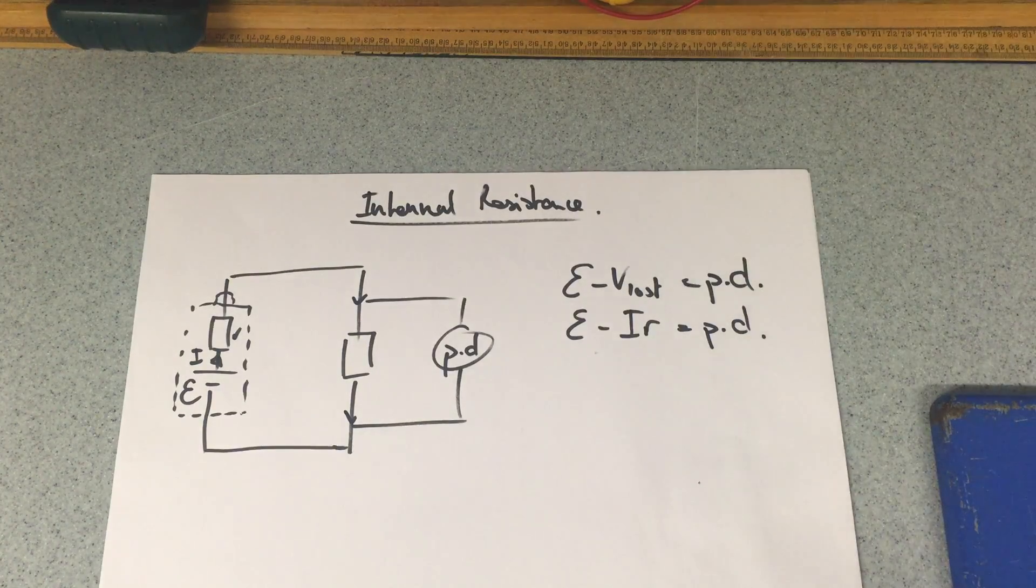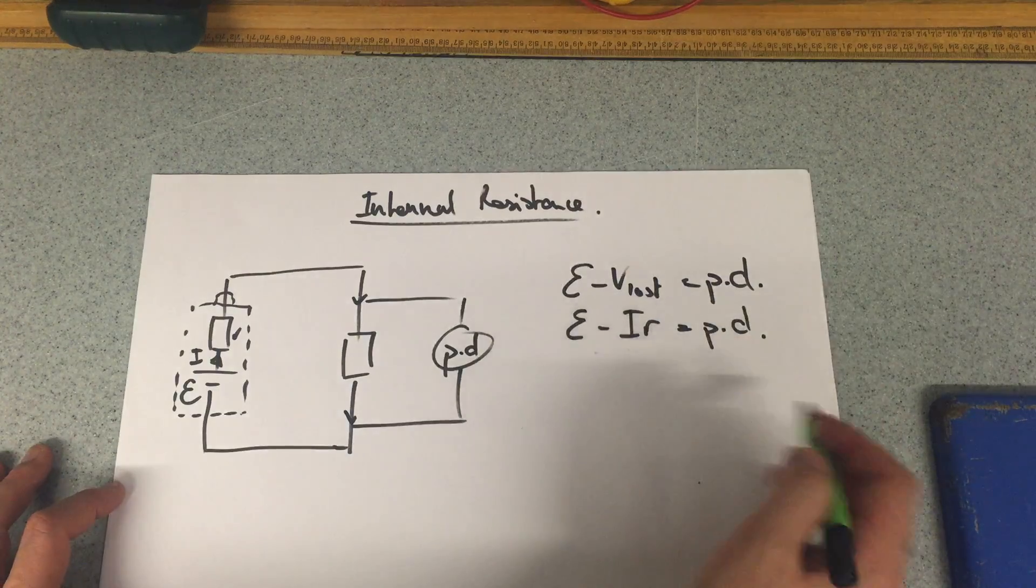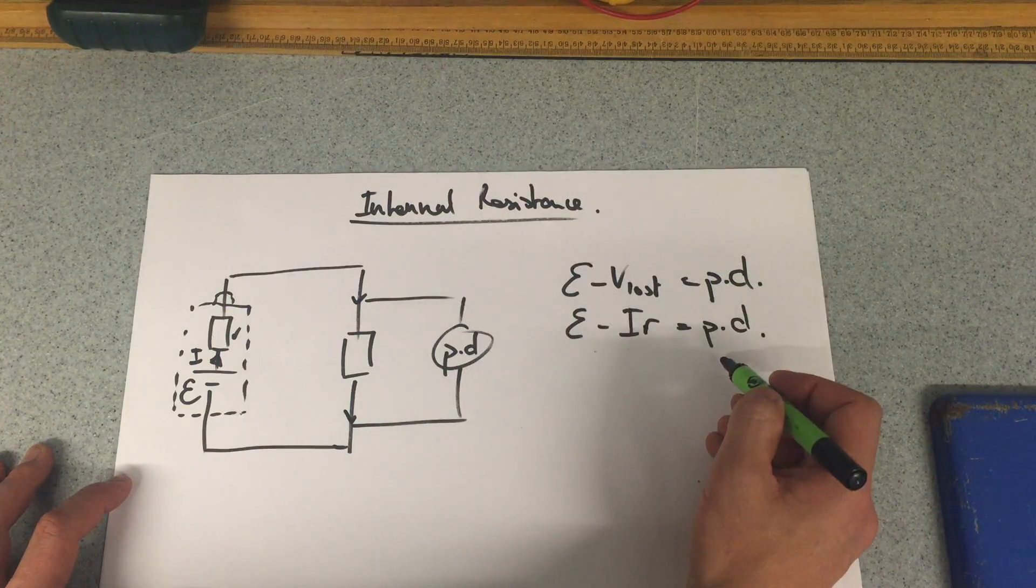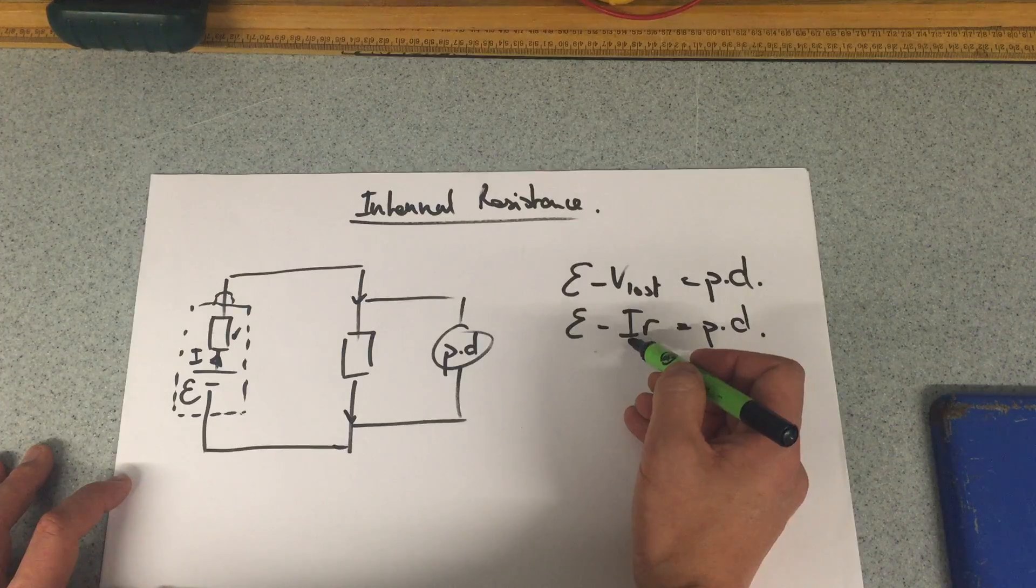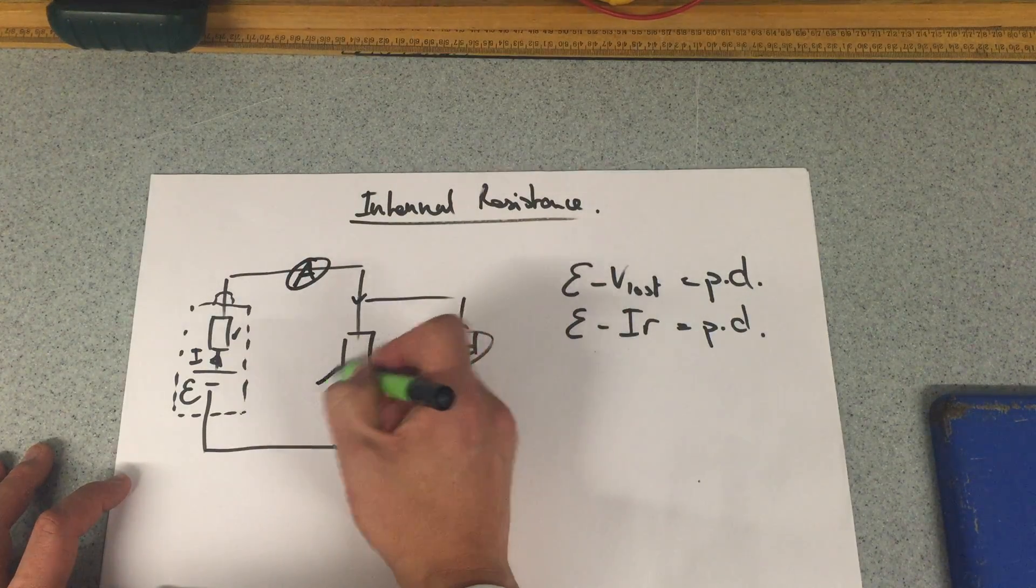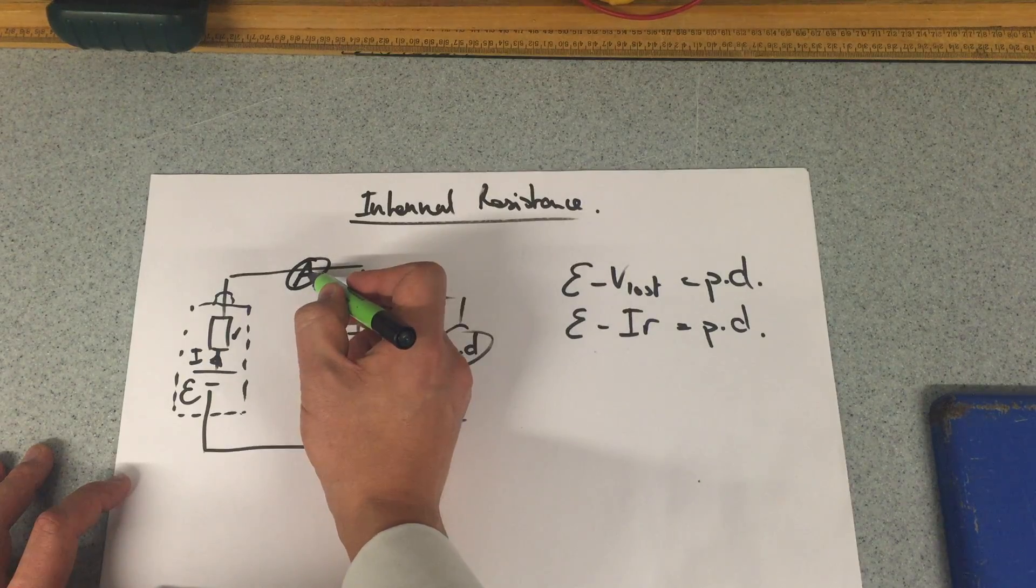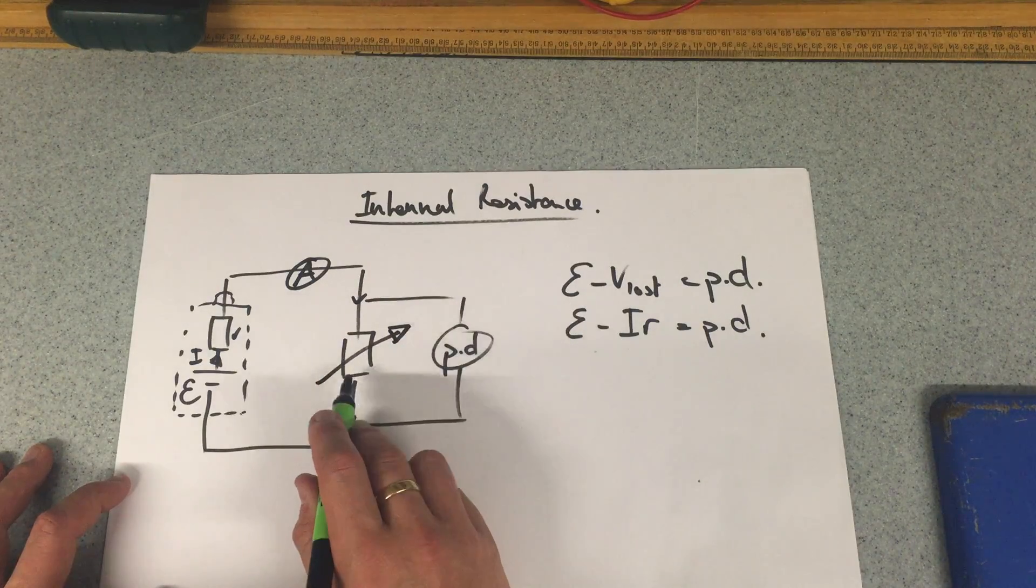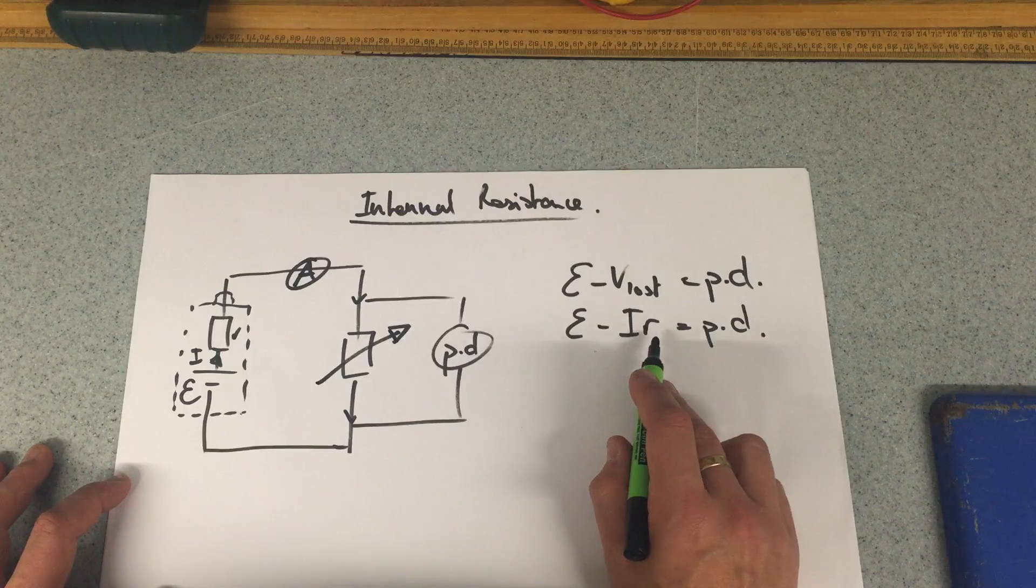We therefore are going to measure the PD and the current, so we need an ammeter in here and a PD, and we need to change the value of the current so we're going to use a variable resistor.